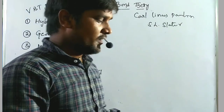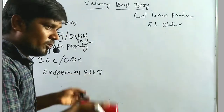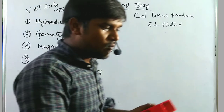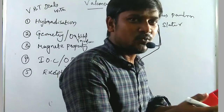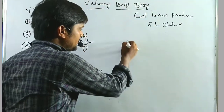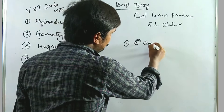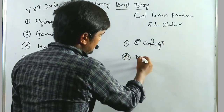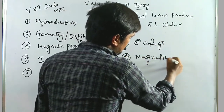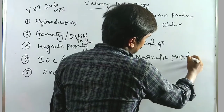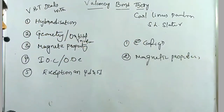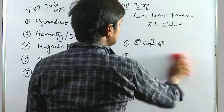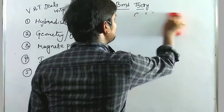Before going into the topic of Valence Bond Theory, we need two things: first, electronic configuration, and second, magnetic properties. We are very familiar with electronic configuration from the 6th and 7th standard, knowing the first 30 elements.